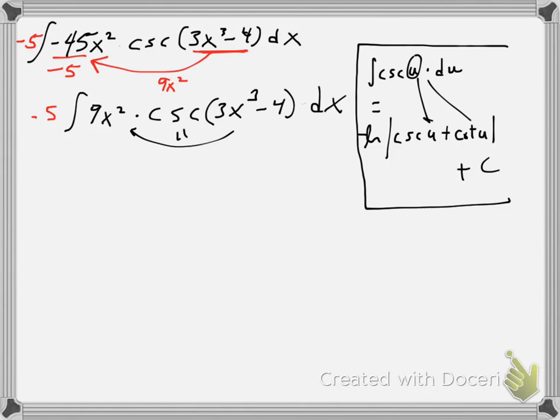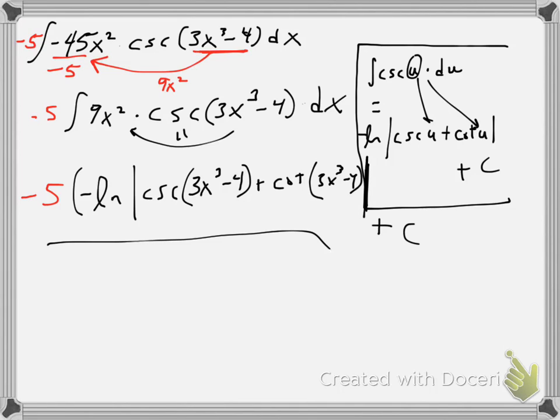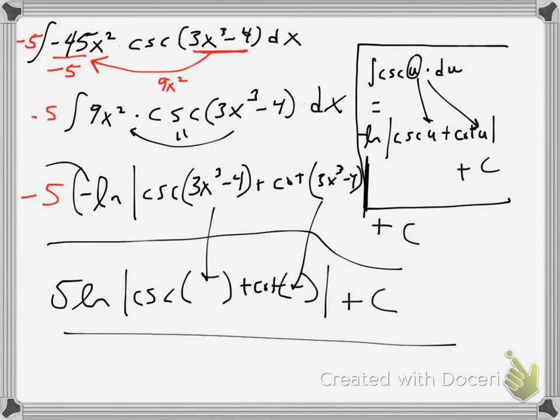So we take this part here and sort of ram it in right there. Okay. Well, the negative 5 is still out here. We know that this is going to be negative ln of cosecant 3x cubed minus 4 plus cotangent of 3x cubed minus 4. Close the absolute value bar. Plus c. And distribute the 5, you know, just multiply the 5, and you get 5 ln absolute value of cosecant of that plus cotangent of that plus c. All right. Fair enough.